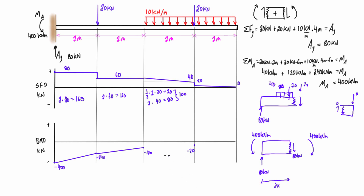This region corresponds to a sloped line on the shear force diagram, so we get a parabolic change in the bending moment diagram here. For the last section, it's just a triangle: 0.5 times 2 meters times 20 kilonewtons = 20 kilonewton meters total area. That change in magnitude takes us from negative 20 up to zero. This is also a sloped line, so we again get parabolic curvature, ending right at zero.